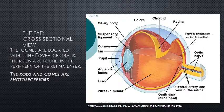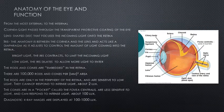The cones are located within the fovea centralis, and the rods are found in the peripheral of the retina layer. The rods and cones are considered photoreceptors.